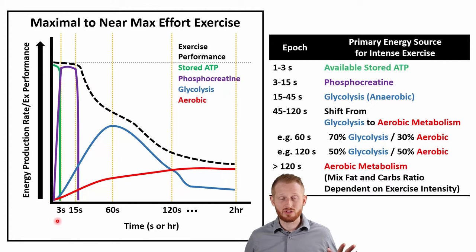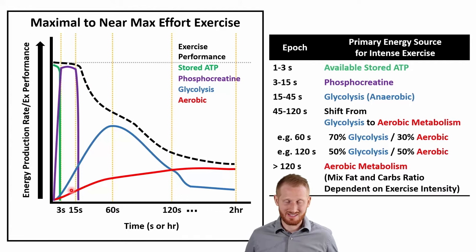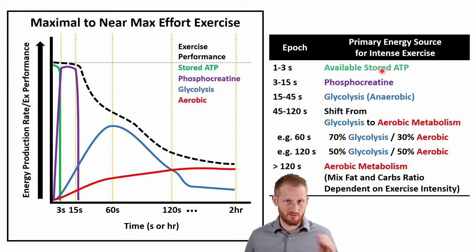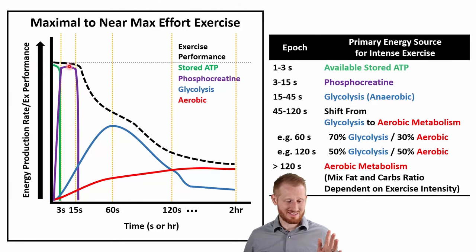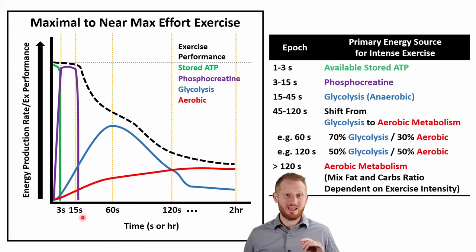The first one to three seconds primarily uses stored ATP — ATP produced before that's just sitting available in our muscles. We burn through that with intense exercise in one to three seconds. After that, we immediately replace energy with phosphocreatine, so from three to fifteen seconds, that period is primarily fueled with phosphocreatine. Looking at the figure, it ramps up as stored ATP runs low and stays high until around 15 seconds, where it quickly diminishes as phosphocreatine runs out.